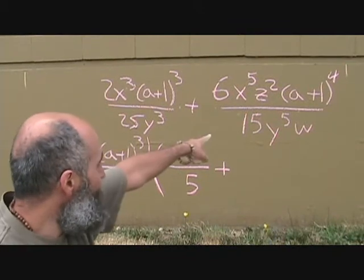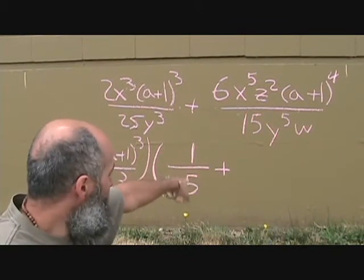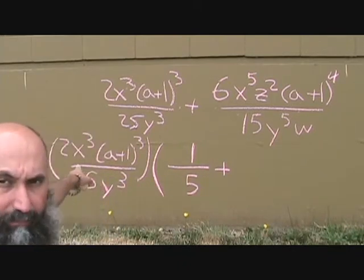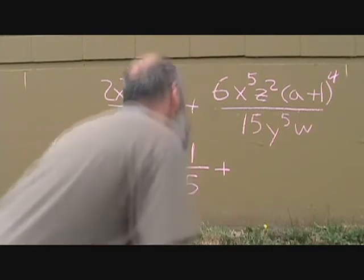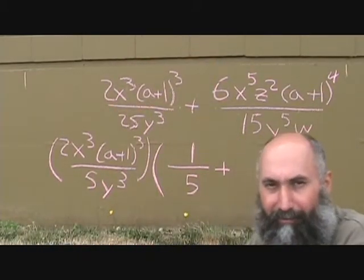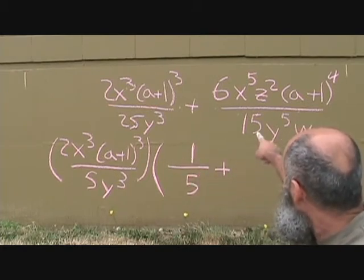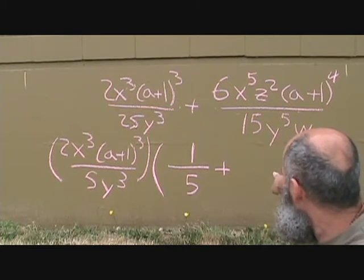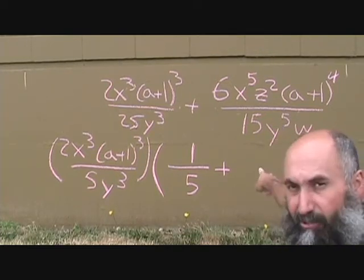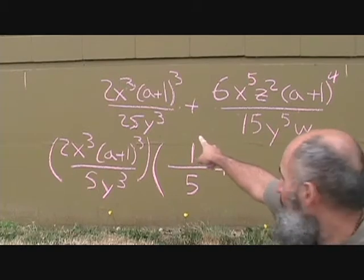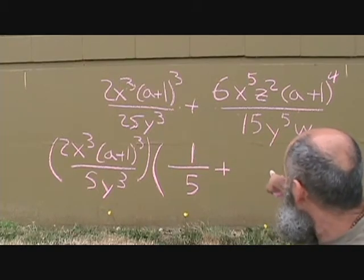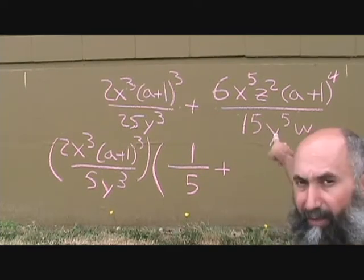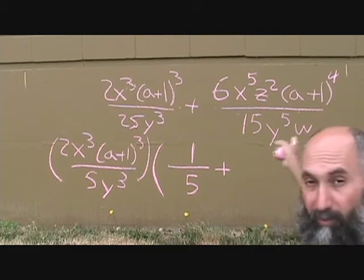So what we've got to do now is recreate the second term. Again, we're going to take a look at this and see what we need. We've got 2x cubed and we have 6x to the power of 5. So we need a 3 on this side. We need an x squared on this side. We need a z squared because we didn't take out a z squared. There wasn't a z in that term. So in here, we're going to need 3x to the power of 2, z to the power of 2, and A plus 1 to the power of 1.